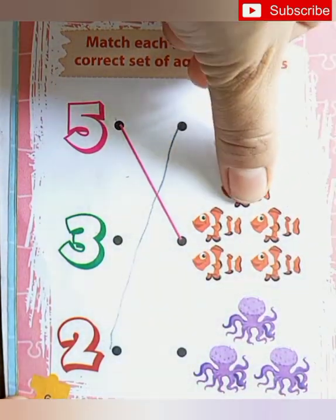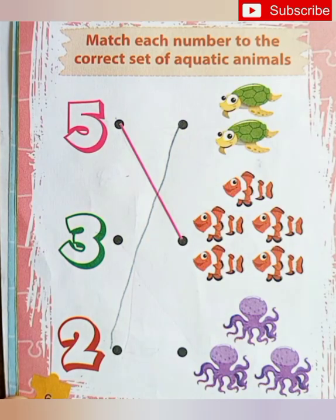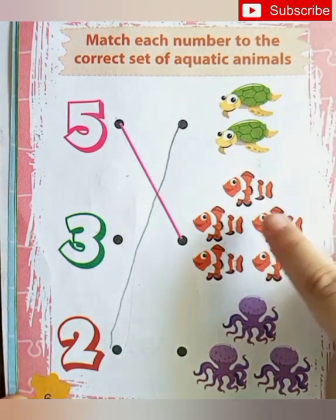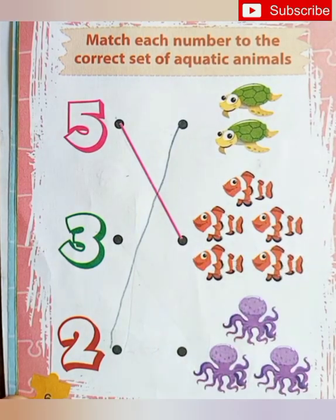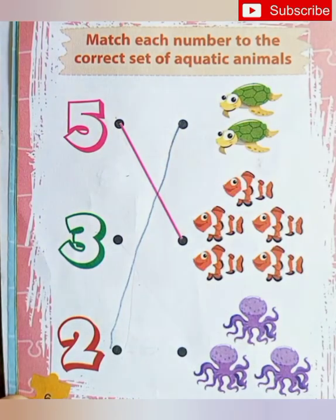Which animal it is? Fish. How many fishes are there? 1, 2, 3, 4. Yes. Connect your dots.